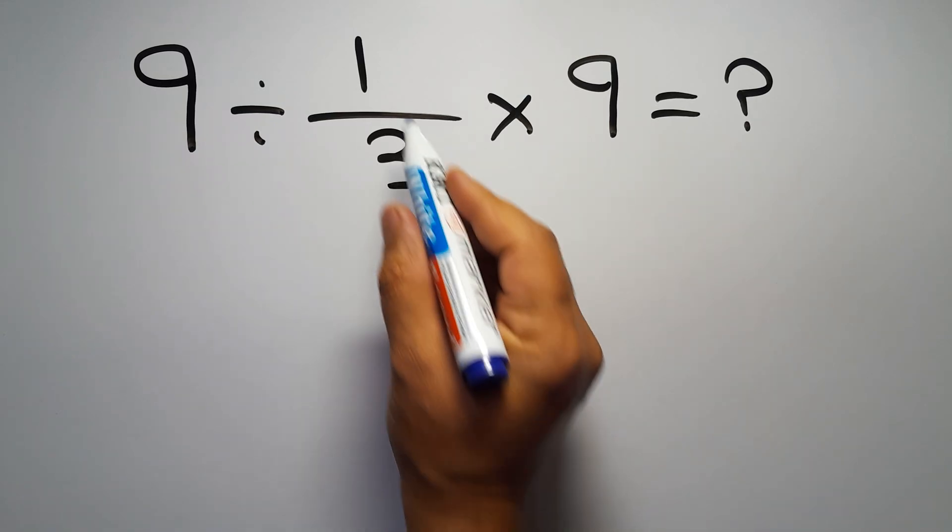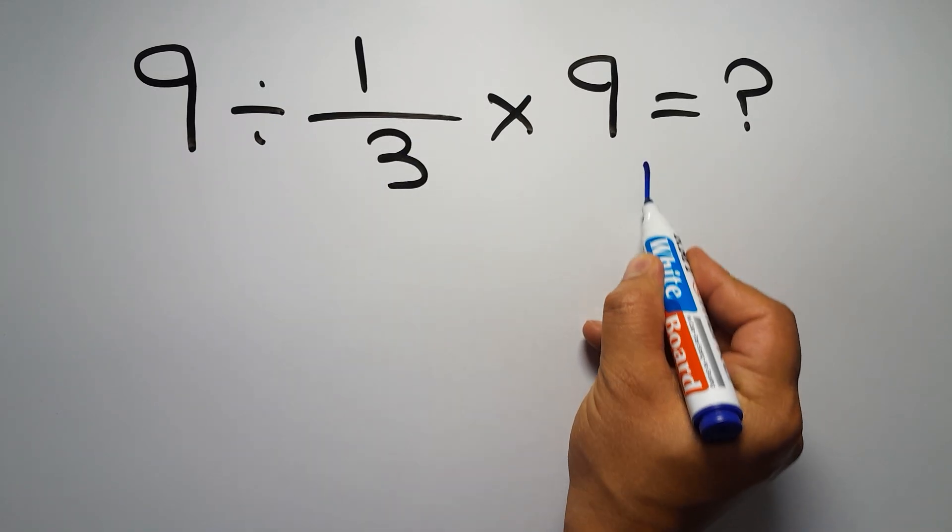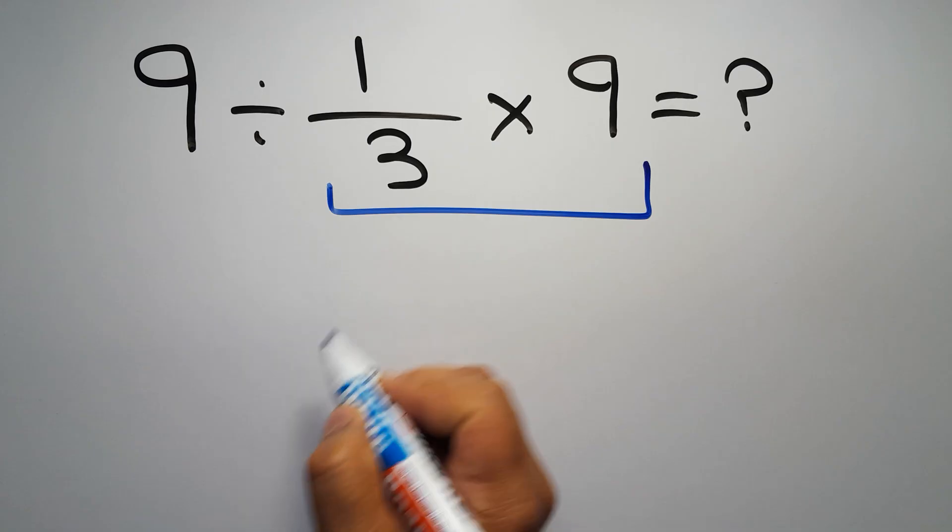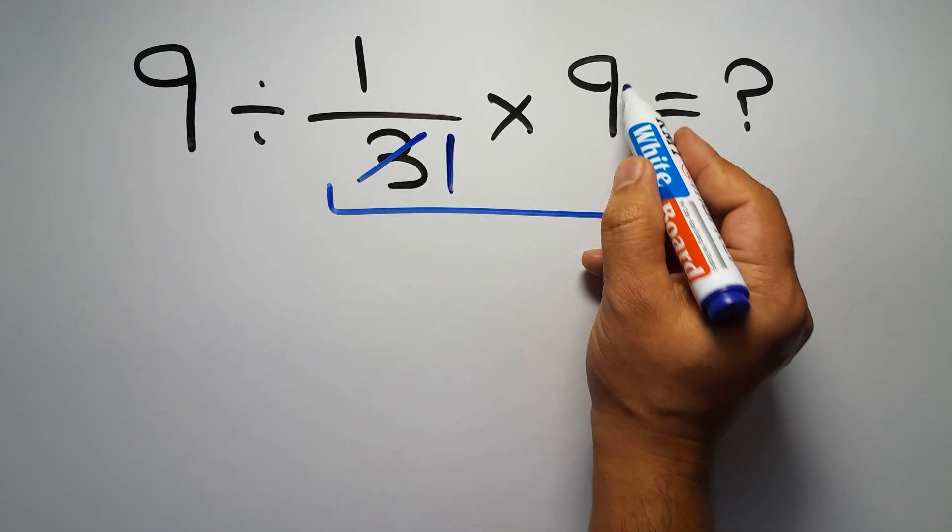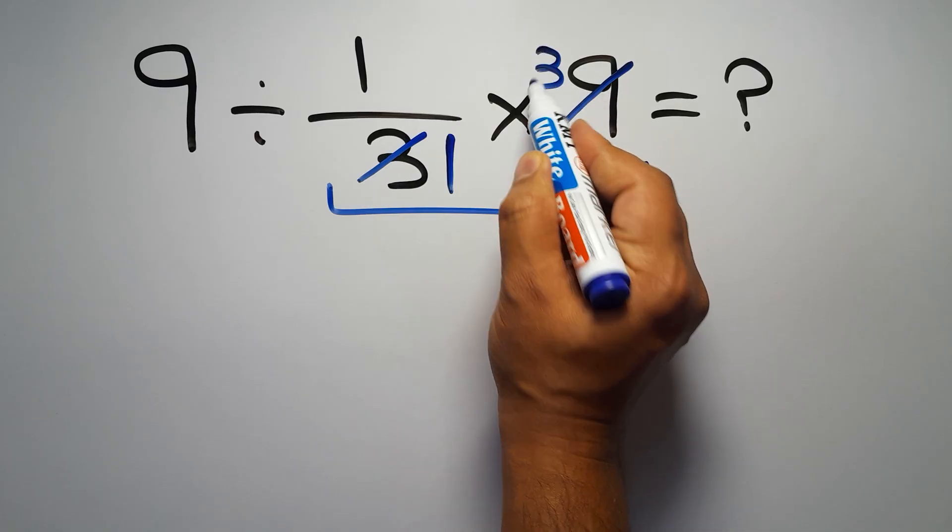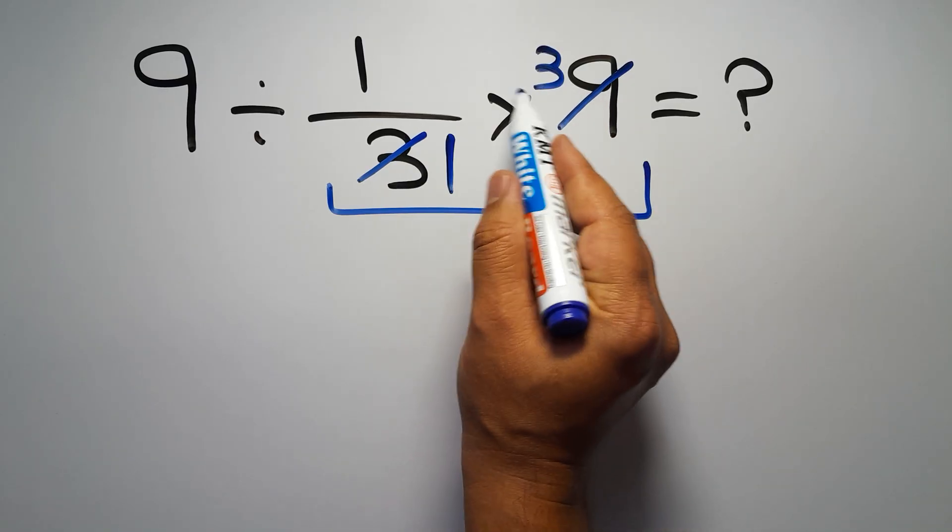First, we do this multiplication. 1 over 3 times 9. 3 divided by 3 equals 1, and 9 divided by 3 gives us 3. So here we have just 3.